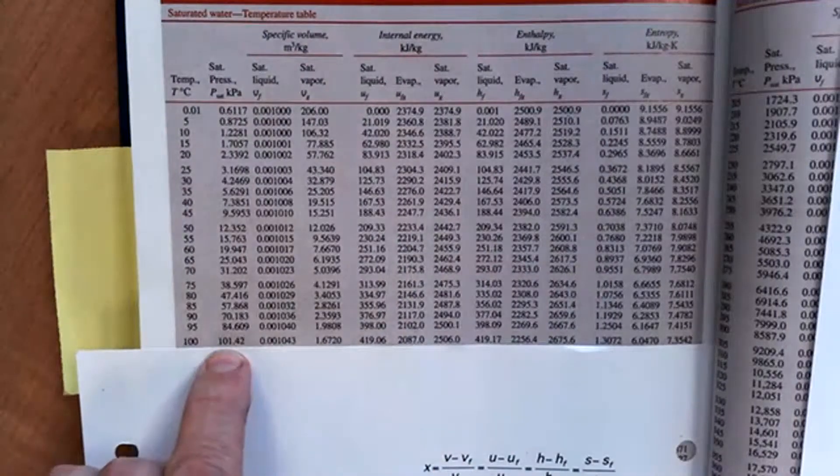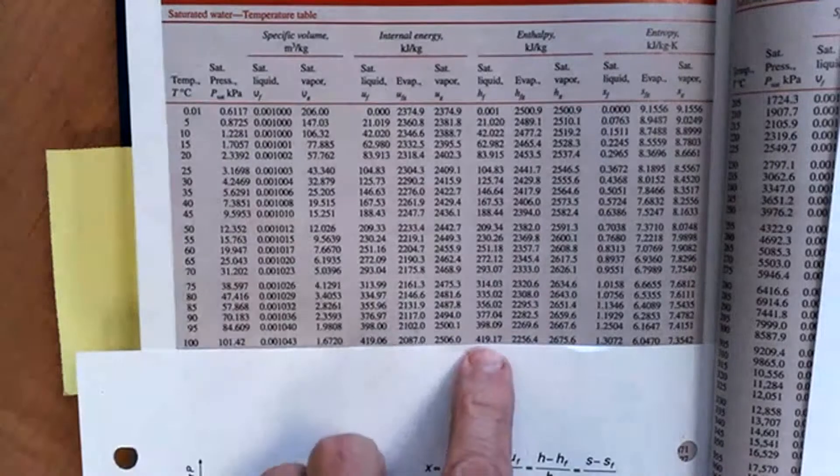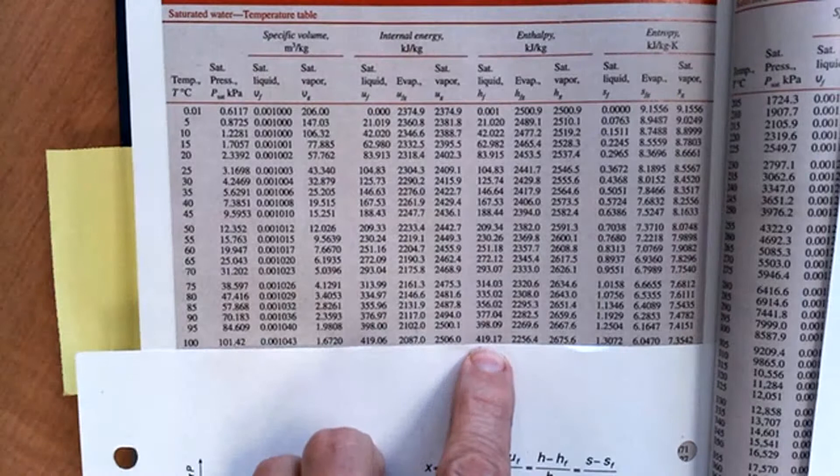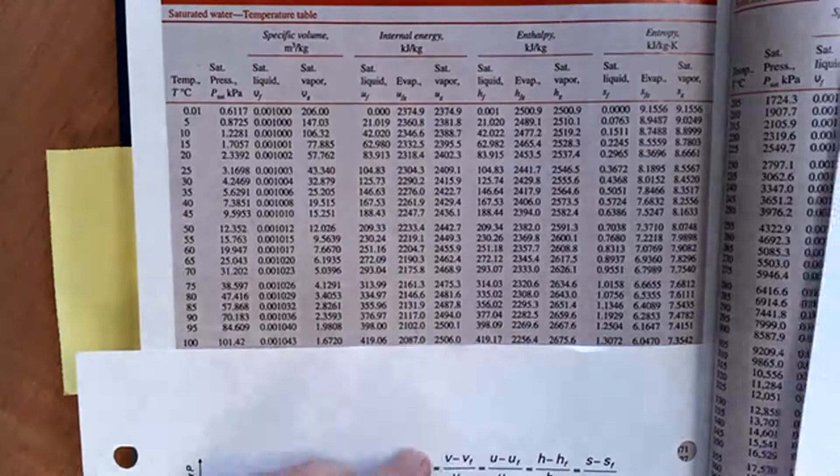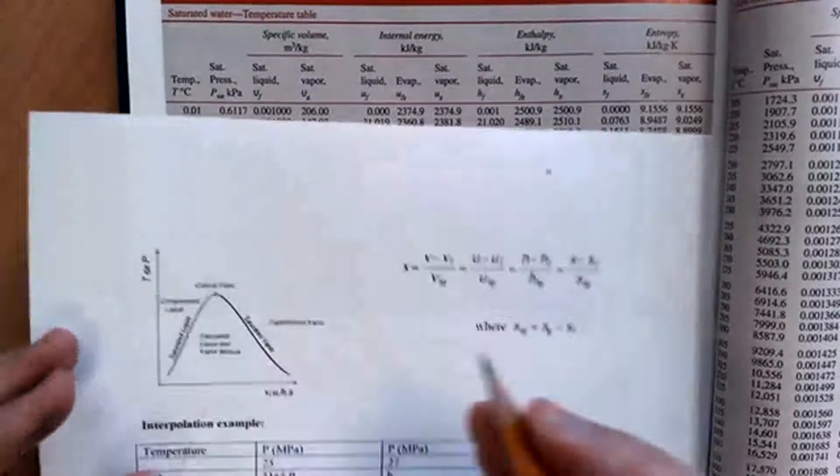So the pressure would be 101. The enthalpy H would be H_f = 419.17. And because you know that it's a saturated liquid, you would be on the saturated liquid line on the dome.